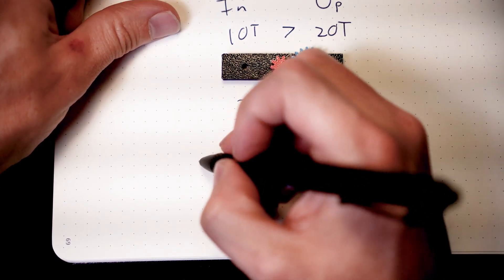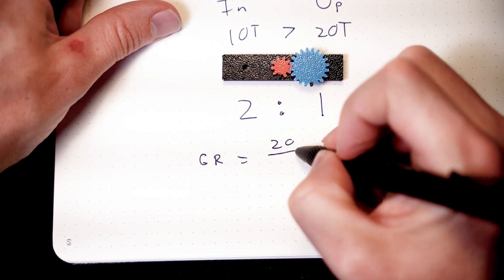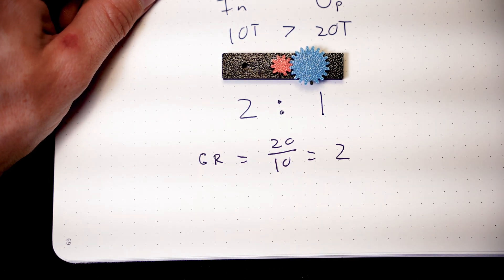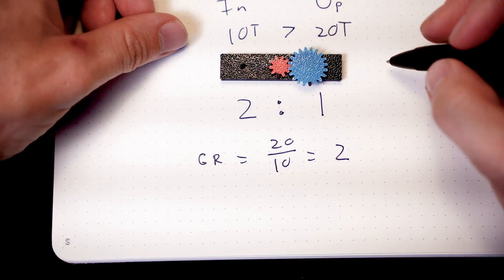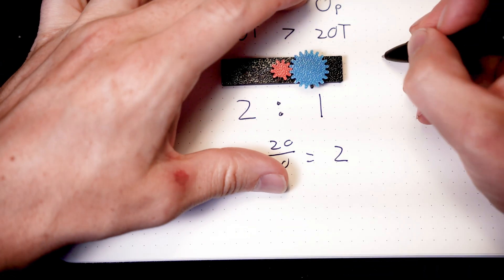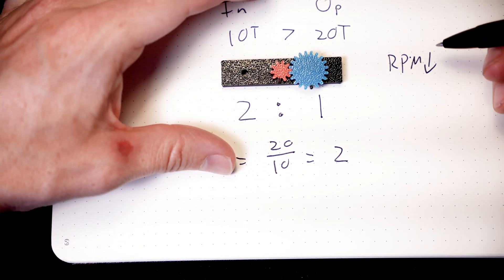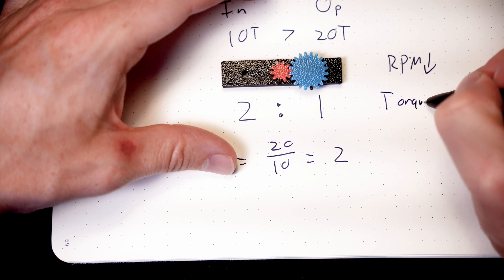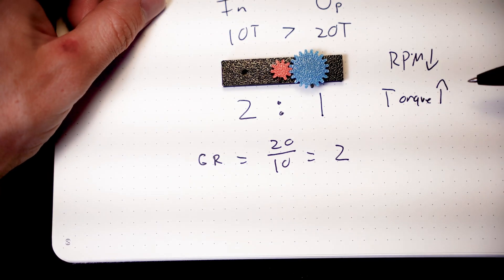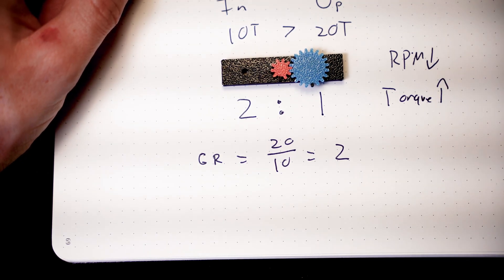So again, if we were going to calculate that out for our gear ratio, we can simply take our teeth output divided by our teeth input and we end up with a two to one gear ratio. Now, unlike overdrive, we're now running in a gear reduction. So we're now reducing our speed or RPM goes down in a gear reduction, but our torque goes up. So it's the exact inverse of the equation. Overdrive or RPM went up, torque went down. In a gear reduction, our RPM goes down, but our torque goes up.